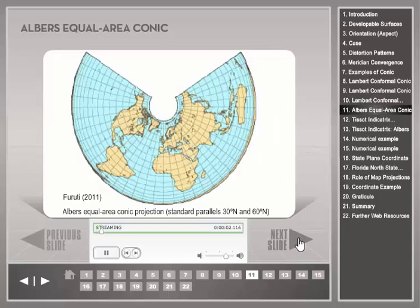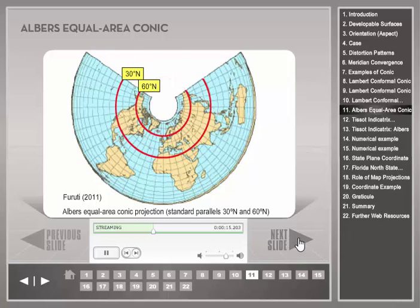The Albers Equal Area Conic projection ensures that all areas on the map are proportional to areas on Earth. It uses two standard parallels — in this example, 30 and 60 degrees latitude north. This projection is frequently used for thematic maps of the U.S. While this is a global depiction of the Albers Equal Area Conic projection, if the objective is to preserve areas for larger continental regions, other projections would be better suited.